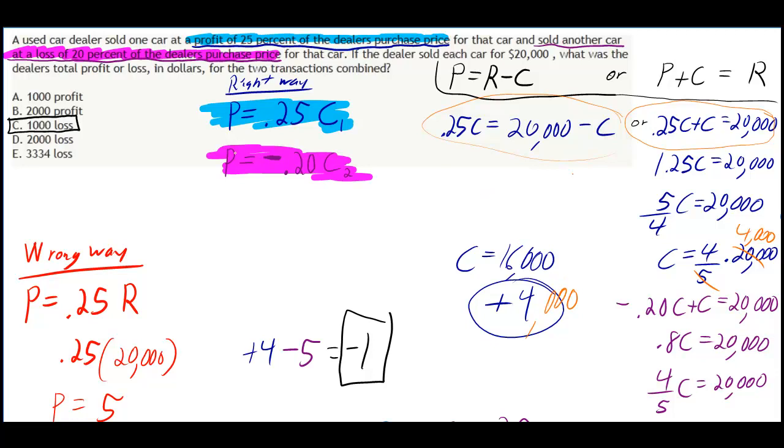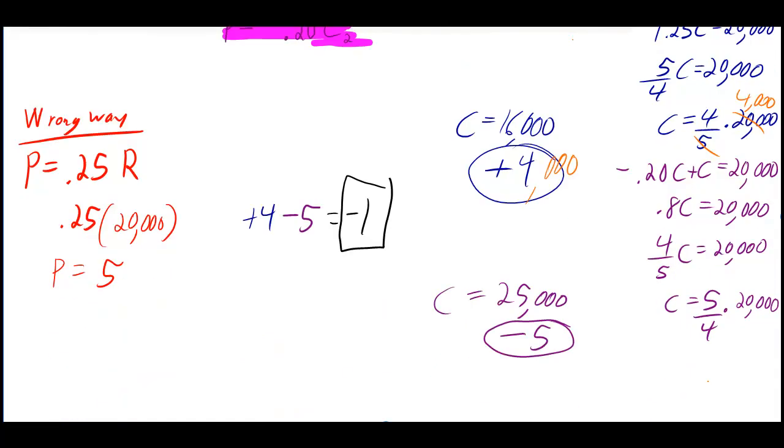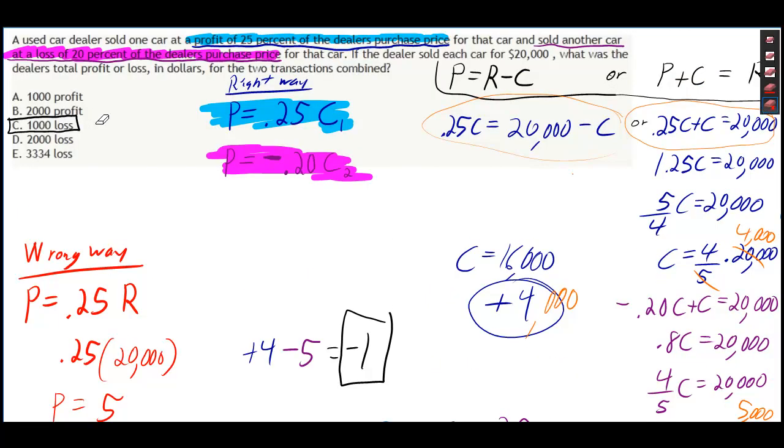Running through the same process for the purple one where he took a 20% loss: it's negative 0.20 of the cost of that car. Adding that to the cost gives you 0.8C equals 20,000. 0.8 can be changed to 4/5, then 5/4 shows up on the other side. When you cancel that, you get 5,000 times 5, which gives you 25,000. So he lost $5,000 on that one. In total, he lost $1,000, so the answer is C.